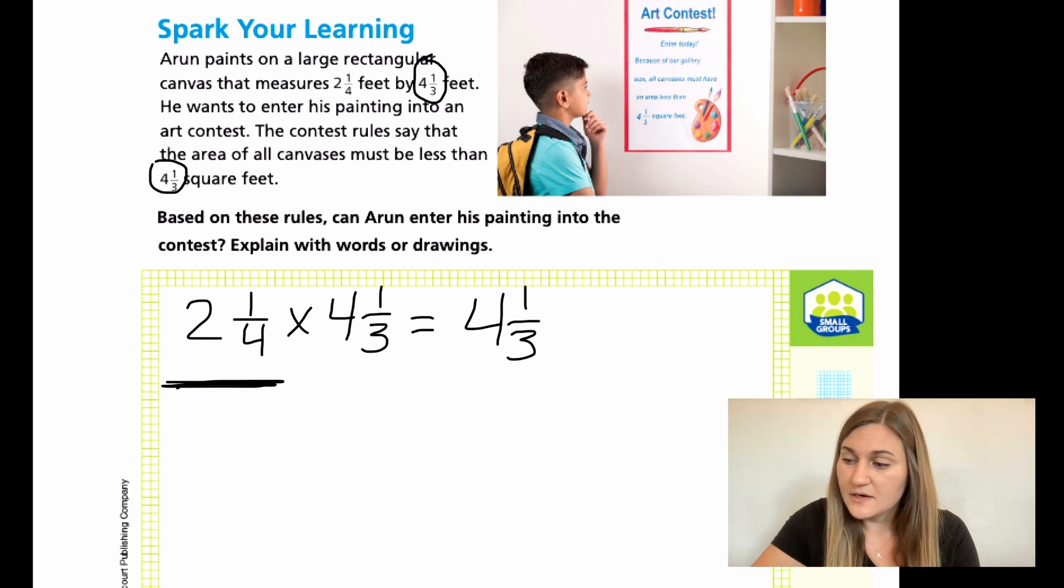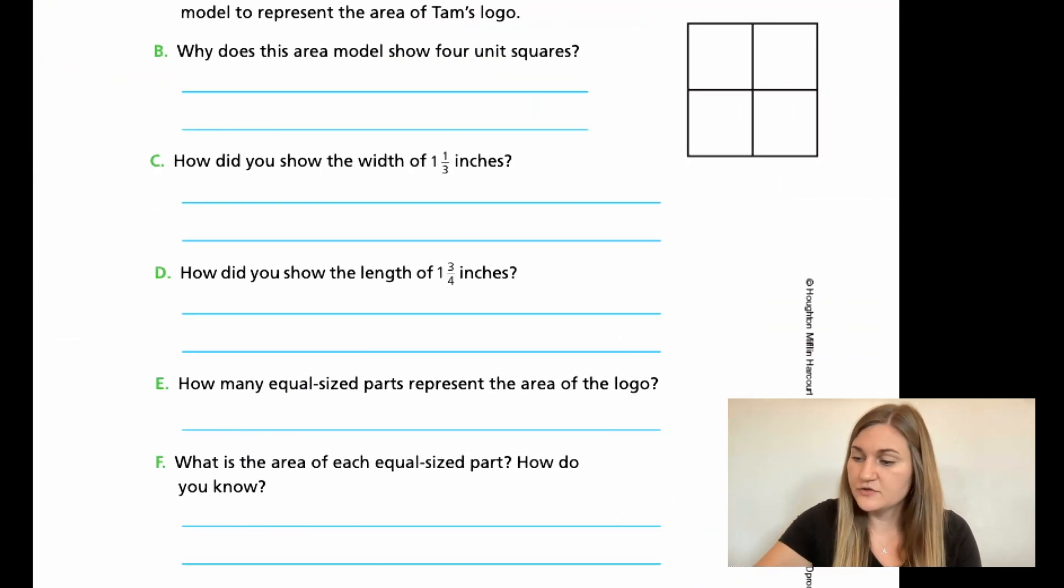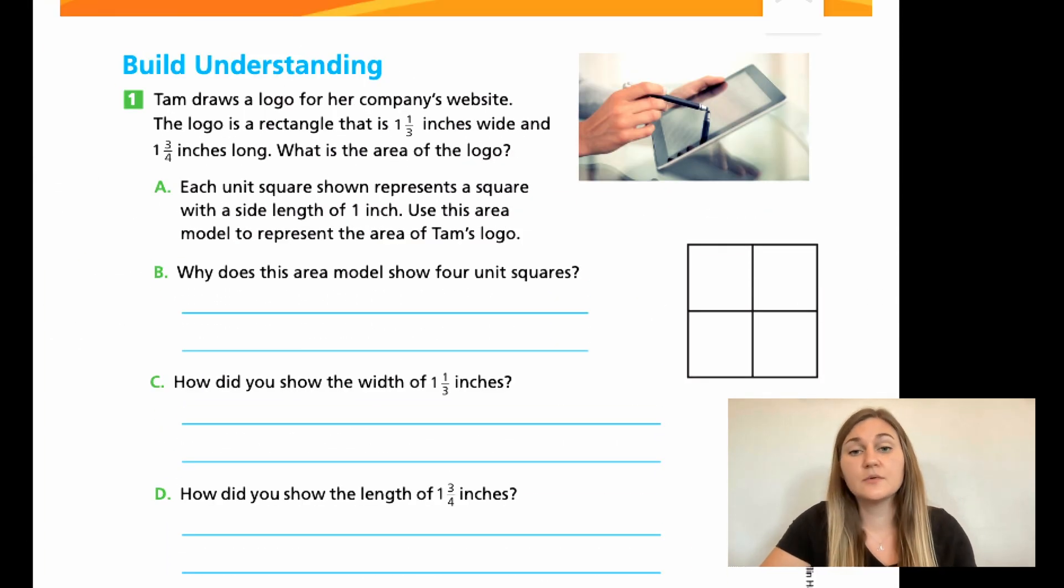Alright, but let's go ahead and flip the page to 222. And I am going to go through this whole lesson. If you want to pause on your own and try a couple problems on your own, please do so. But I am just going to go ahead and teach the thing all the way through. So we have a Build Understanding. Number one, it says Tam draws a logo for her company's website. The logo is a rectangle that is 1 and 1/3 inches wide and 1 and 3/4 inches long. What is the area of the logo?